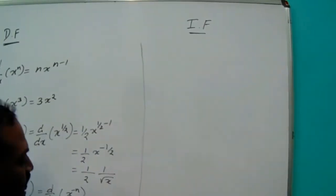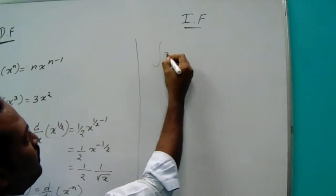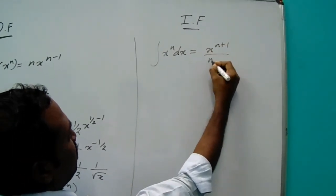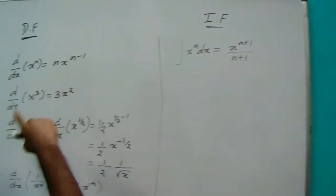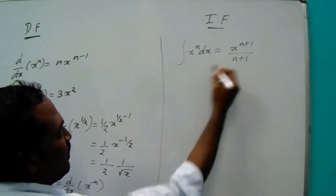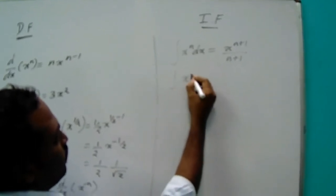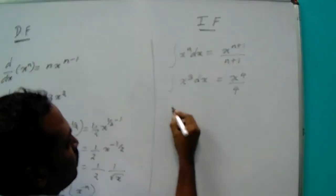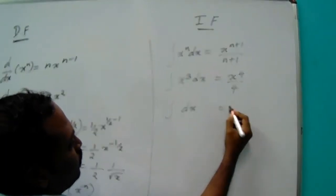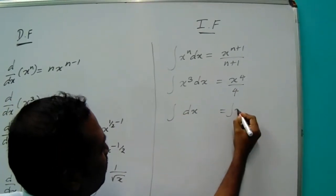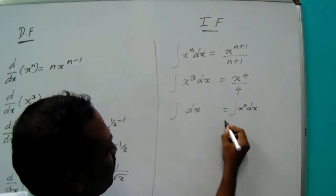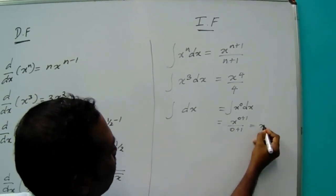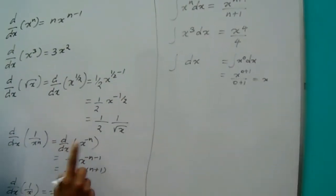What is the integration formula? The integral of x^n dx equals x^(n+1)/(n+1), so the power increases and you divide. For example, the integral of x³ dx equals x^4/4. The integral of dx means x^0, and anything to the power 0 is 1, so using the formula x^(0+1)/(0+1), you get x. So always remember, the integral of dx is x.